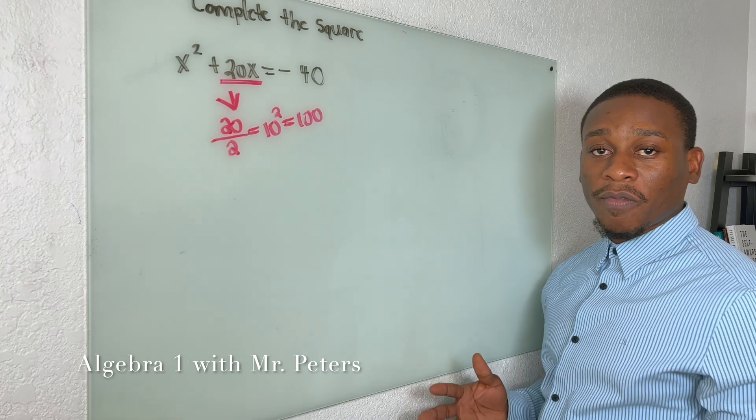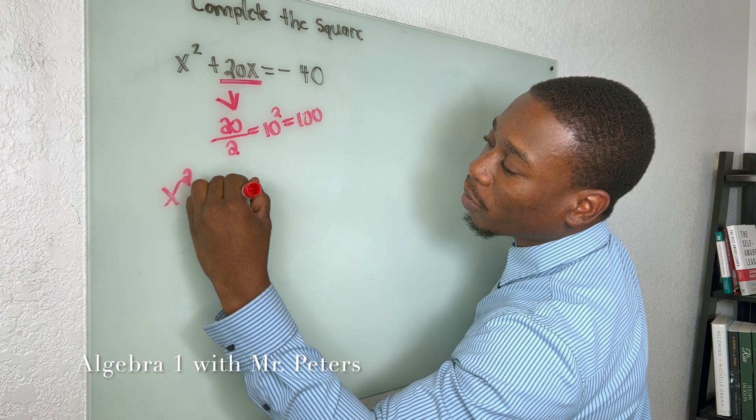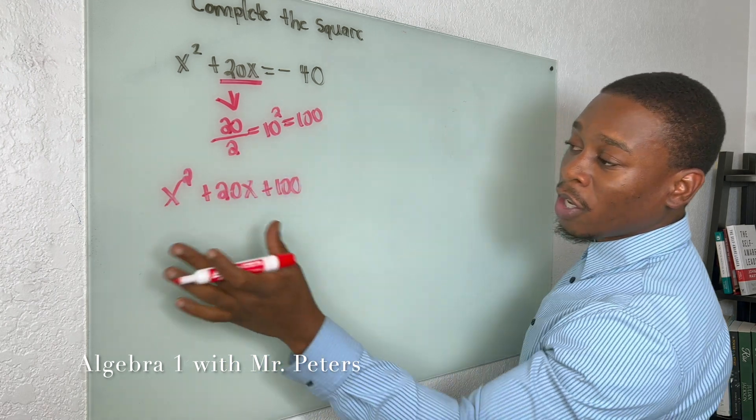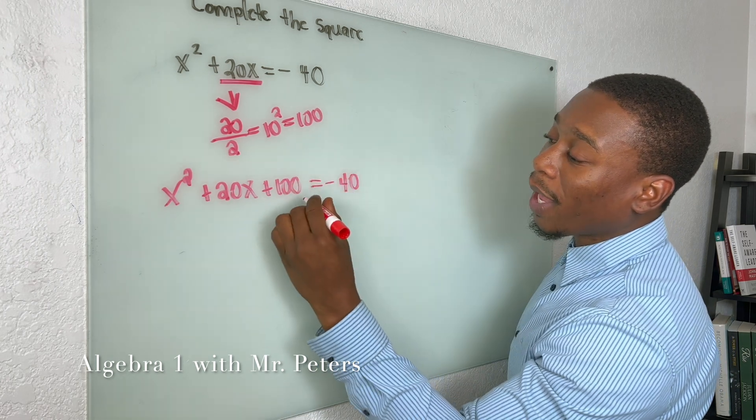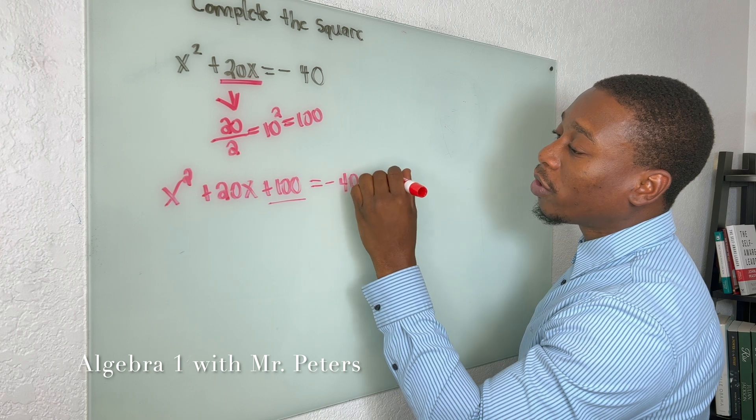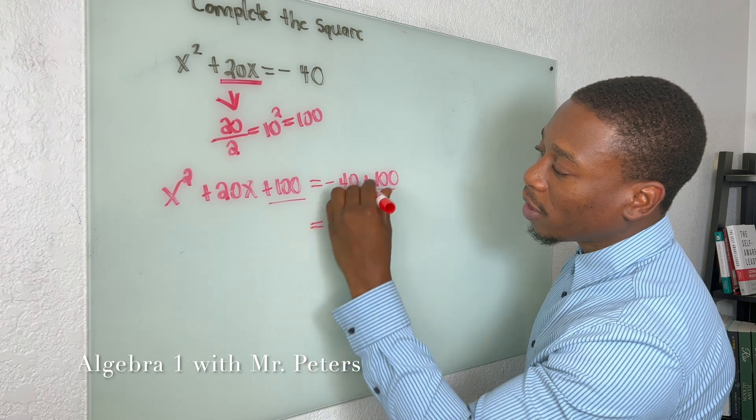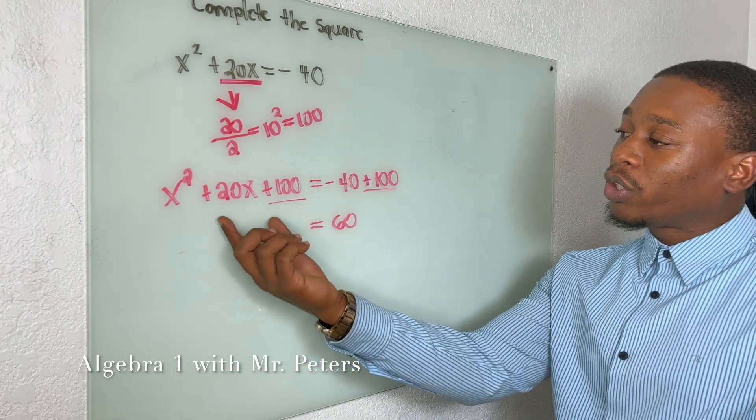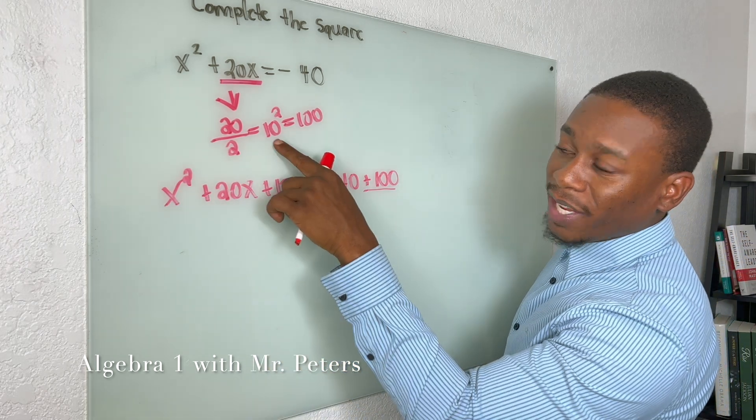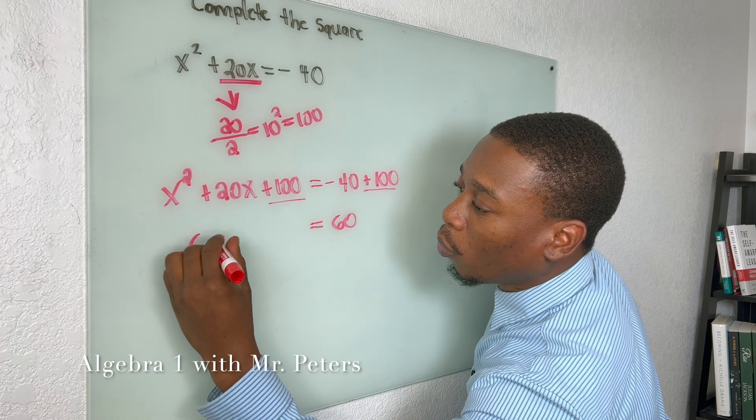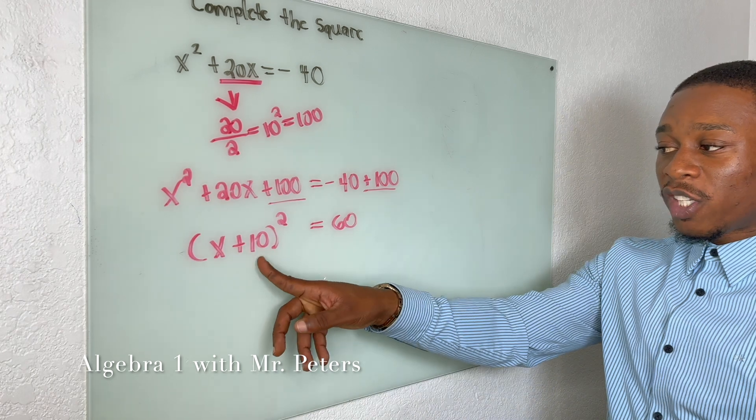Once we square 10, we're going to get 100. Why are these two pieces of information important? When we write out our trinomial, we're going to have x² + 20x + 100. So this is the perfect square trinomial, and we need to make sure that once we add 100 here, we add it on the other side of the equation. So now we're going to simplify.